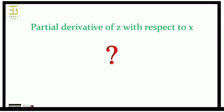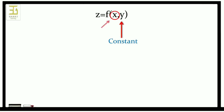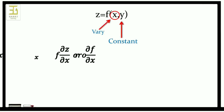So what is the partial derivative of z with respect to x? We know that z is a function of x and y. If we set y as constant and vary only x, then z will be only a function of x. The derivative of z with respect to x treating y as constant is called the partial derivative of z with respect to x.